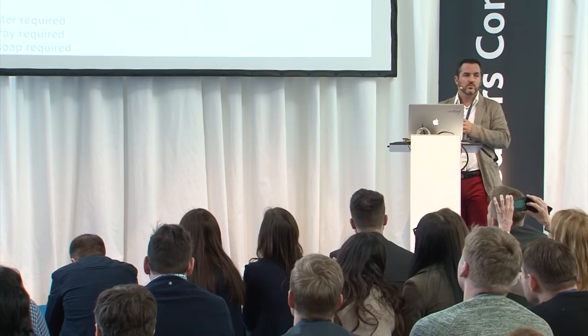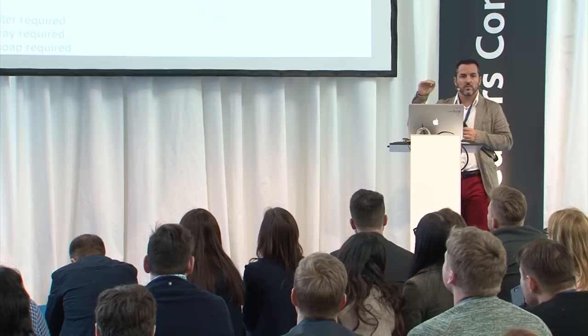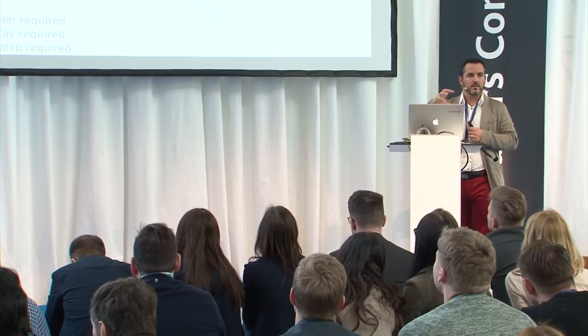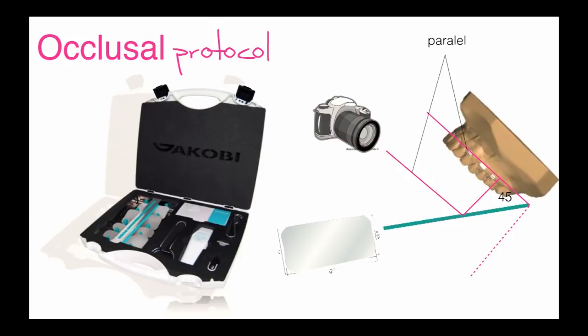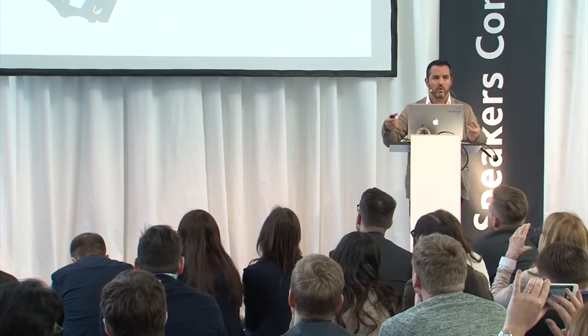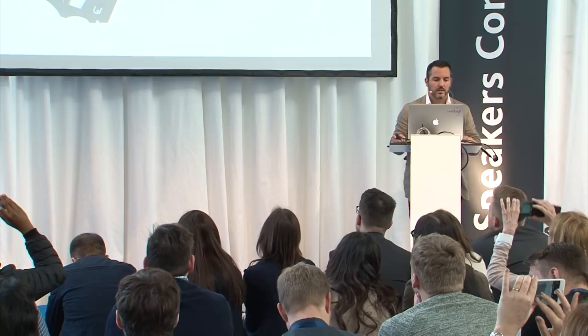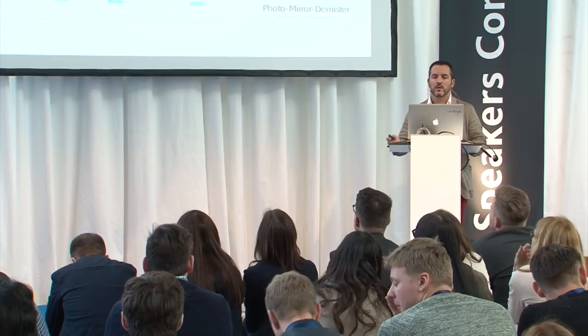If you use the right tool, you don't need hot water, air spray, or liquid soap, because the mirror won't get foggy. The instrument blows hot air on the surface so your mirror is always perfectly sharp. It also has LED lights — when you're doing intraoral photos the mouth is dark and the camera can't focus, but these two LEDs help you focus. The mirror should be at 45 degrees with the camera parallel to the smile line. I recommend the Jacobi equipment — it gives me a tool to hold the mirrors, high-quality mirrors, and retractors. This is the complete kit including the photo mirror demister.